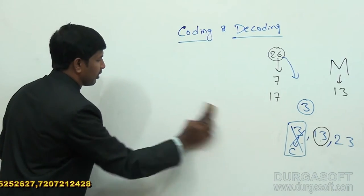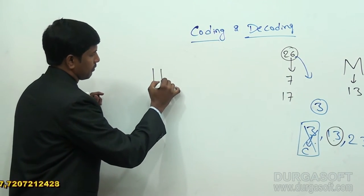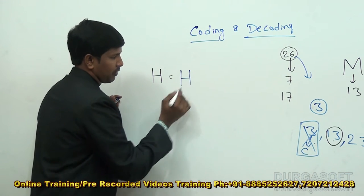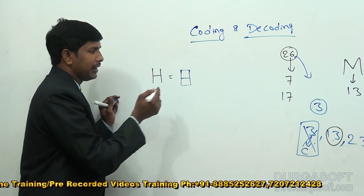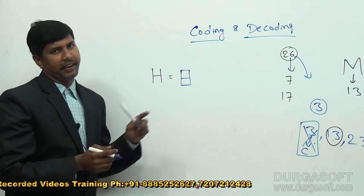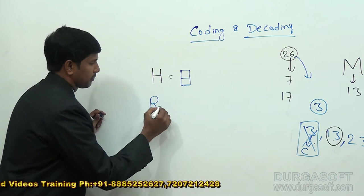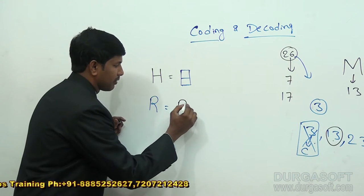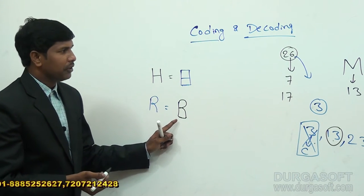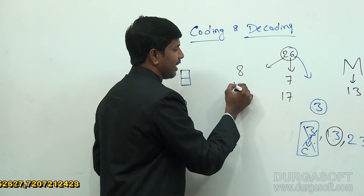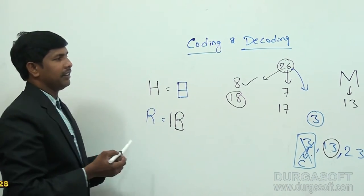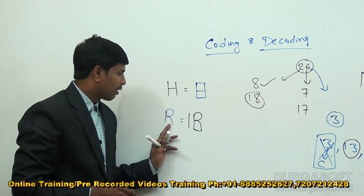Now let's take H. When you write H and make it a closed circuit, it represents the number 8. That's why H value is simply 8. Next, R — when I write R and make a closed circuit here also you find 8. But we know 8 appears only twice in 26 numbers: 8 and 18. Since 8 is already given to H, the remaining option is 18. That's why R value is 18.